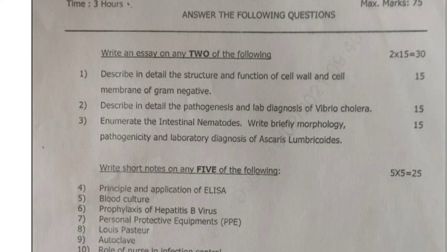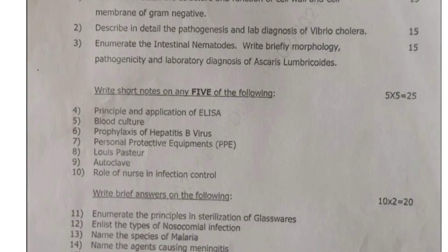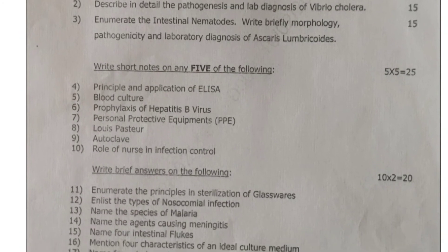Next, write short notes on any 5 of the following. Short notes are 5-mark questions. From question 4 to 10 there are seven 5-mark questions, and you have to answer only five. So 5 into 5 equals 25 marks.